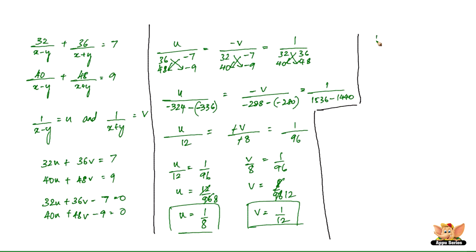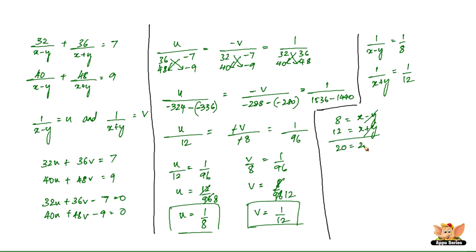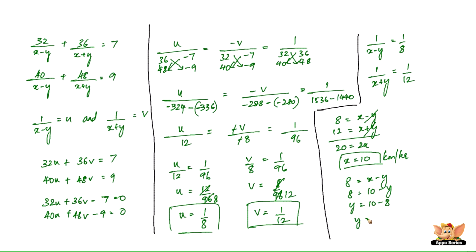Now using back-substitution: since 1 divided by (x minus y) equals u equals 1 by 8, we get x minus y equals 8. And since 1 divided by (x plus y) equals v equals 1 by 12, we get x plus y equals 12. Adding these two equations, y cancels and we get 2x equals 20, so x equals 10 kilometers per hour. Substituting back: 8 equals 10 minus y, so y equals 2 kilometers per hour.